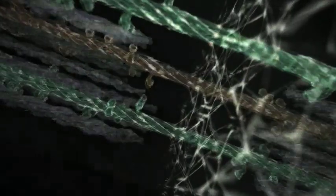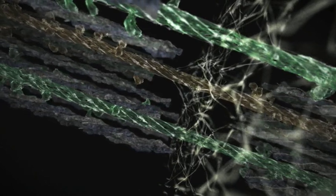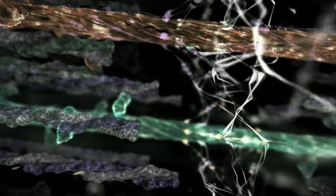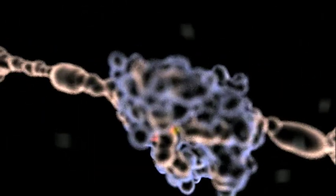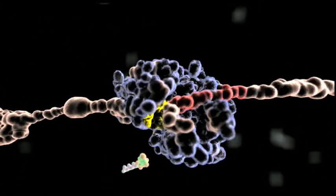How does titin kinase get activated by force? In combination with molecular dynamic simulations and single molecule force spectroscopy experiments, we could show that its ball-of-wool-like unwinding results in the opening of a binding pocket, primed for docking of the small molecule ATP.